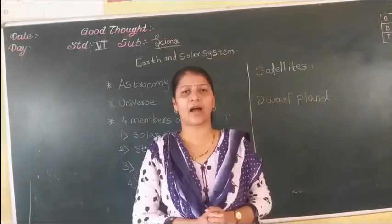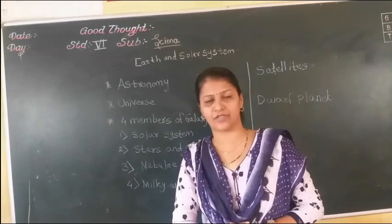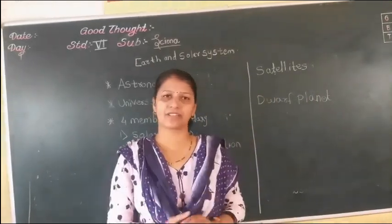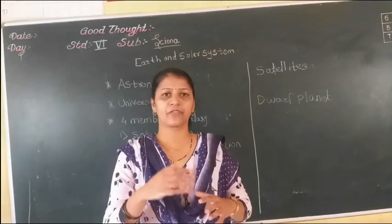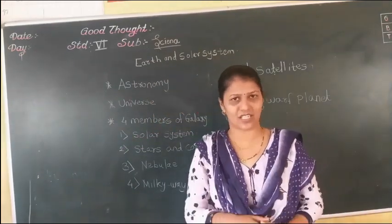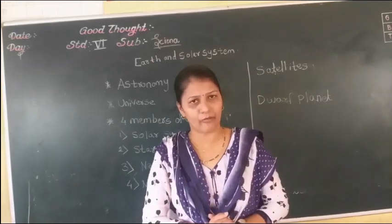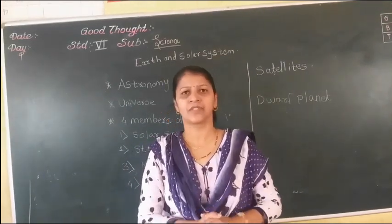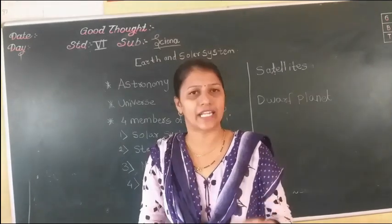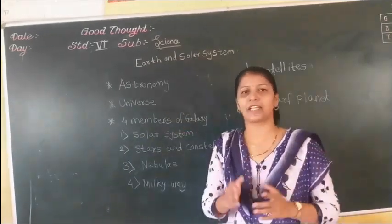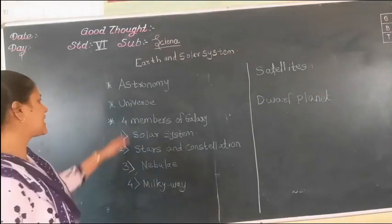When you learn anything about numbers, that subject is called a math subject. When you are dealing with grammar, that subject is called English — it deals with English grammar. Similarly, when we are studying about the Solar System or about the environment, we call this a science subject. When students study about a particular area, that is called specialization. For example, if students are studying about the solar system, that study is called Astronomy.